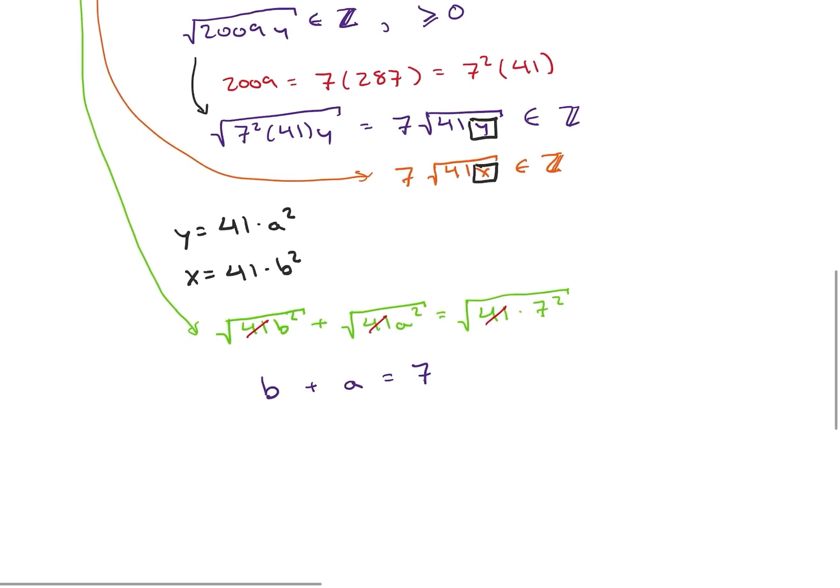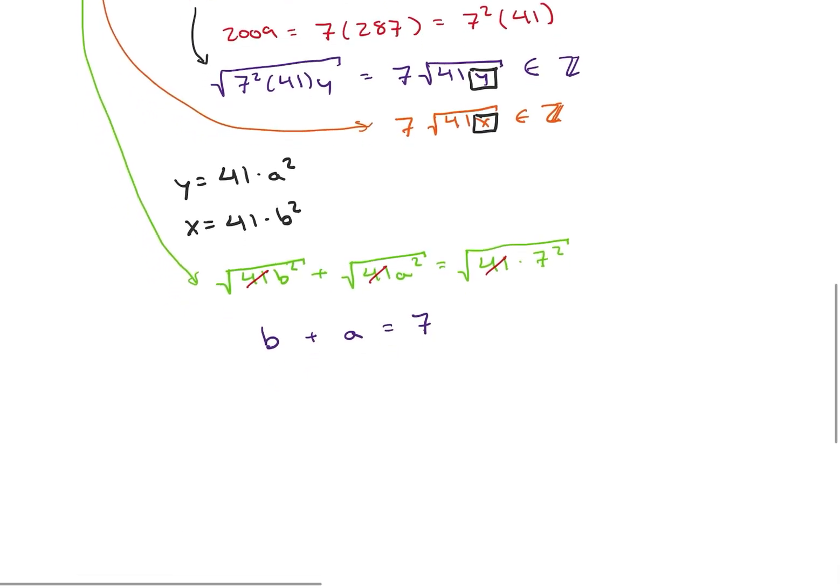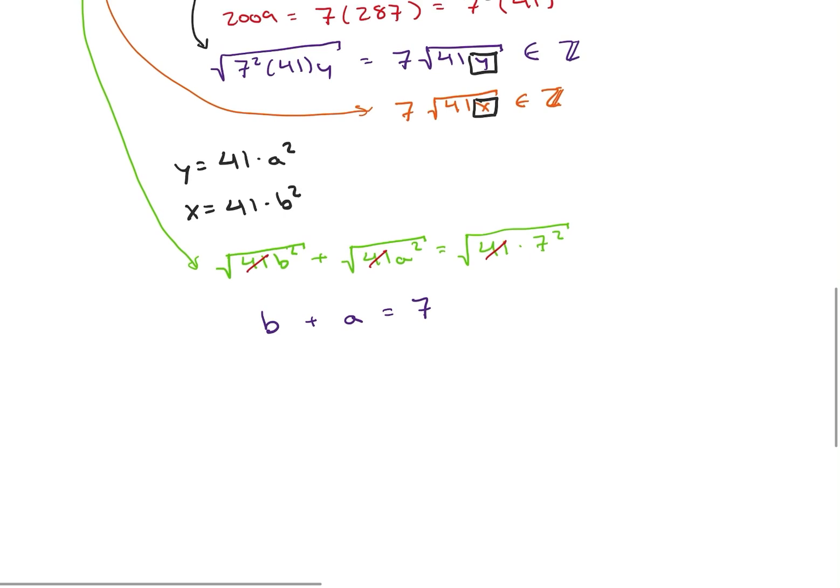So now that we have that, we can create ordered pairs of everything our answer could be. So that means that (a,b) is going to be equal to (0,7) or (1,6) or (2,5) or (3,4) or the mirror images of all those guys.